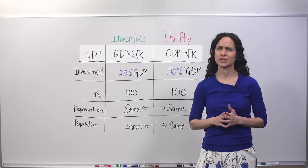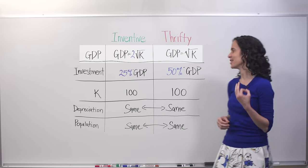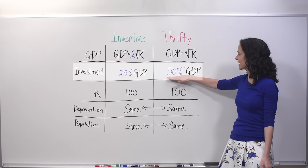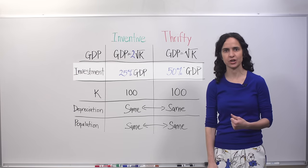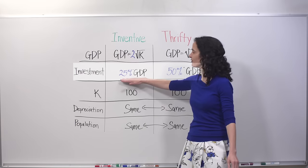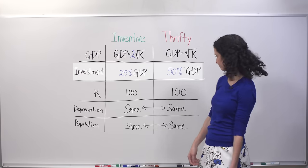So what does Thrifty have going for it? Not surprisingly, Thrifty has that higher savings rate. It's saving 50% of everything it produces GDP-wise each year versus Inventive's 25%.